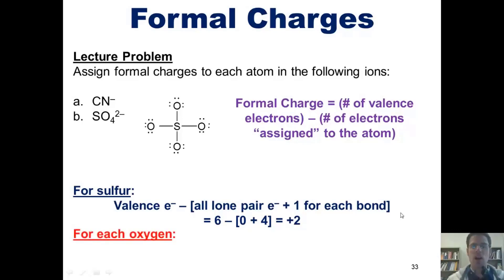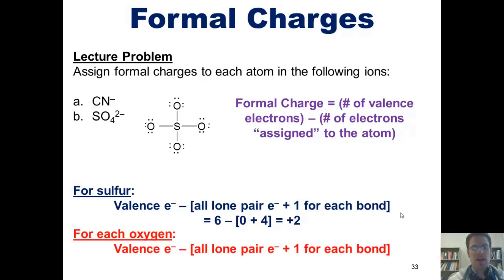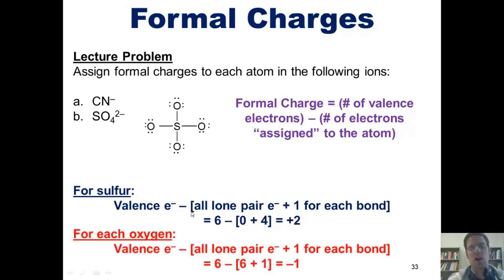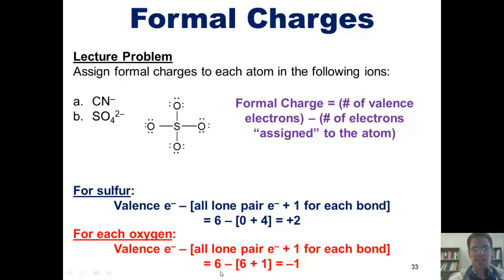For each oxygen atom, the number of valence electrons oxygen has is six. Each oxygen has six total lone pair electrons around it, and each oxygen is also experiencing one bond. Thus, each oxygen's formal charge in this structure is six minus the sum of six plus one, which is negative one.